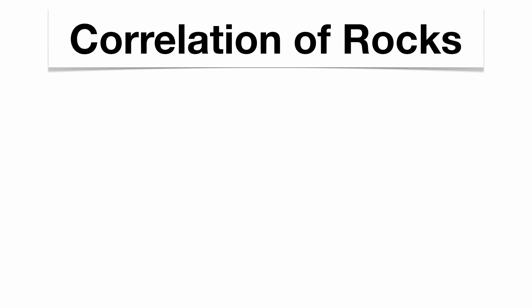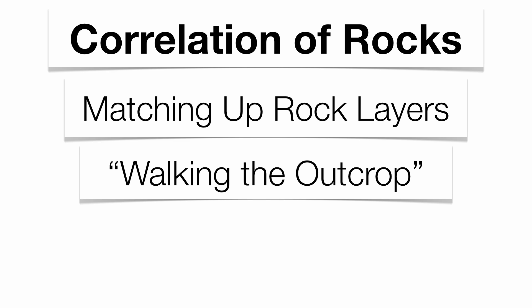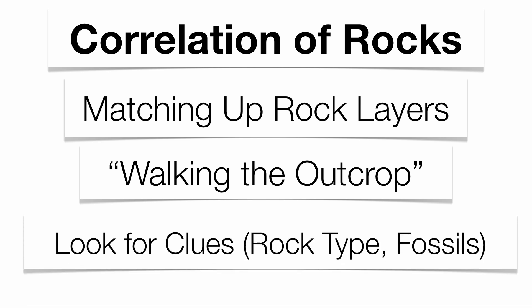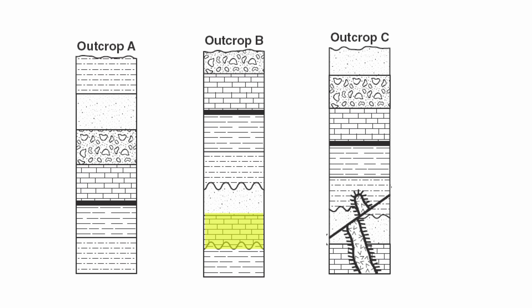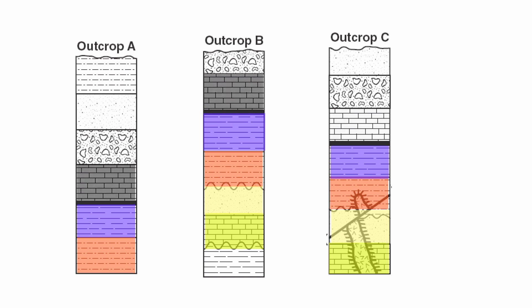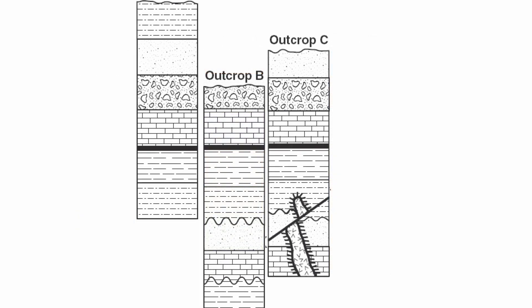We use both index fossils and volcanic ash to correlate rocks — correlation just means to match up rock layers. Scientists do what's called walking the outcrop, looking for clues in the rock to match them up and figure out if they're similar in age. You look at rock types — limestones, sandstones, siltstones, conglomerates — and match them in order. This also helps you identify the oldest and youngest rock layers: the rock layer at the bottom of an outcrop is the oldest, and the rock layer at the top is the youngest.